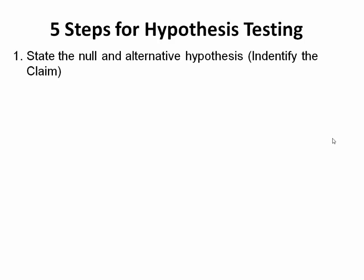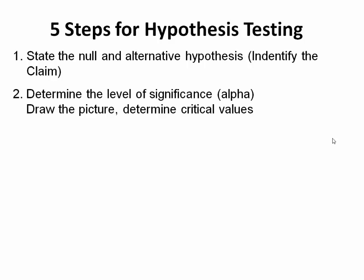For hypothesis testing, step one, we're going to state the null and alternative hypothesis and at the same time identify the claim. In step two, we're going to determine the level of significance, which we also call alpha. We're also going to draw the picture and determine our critical values.